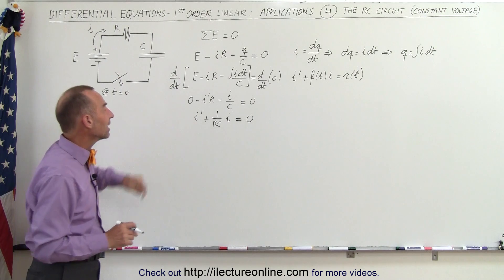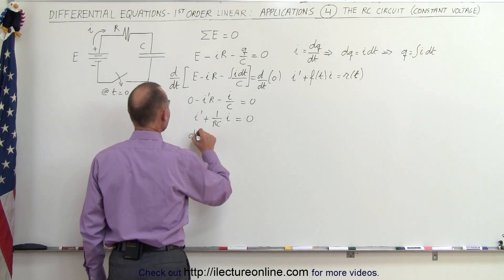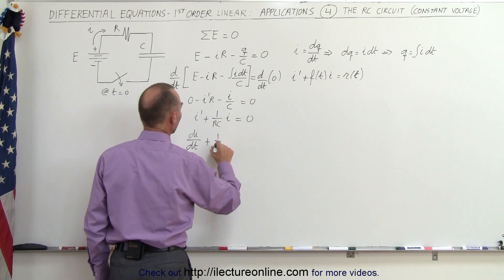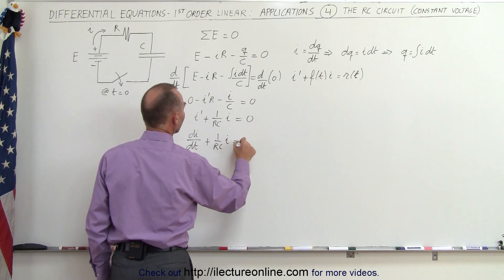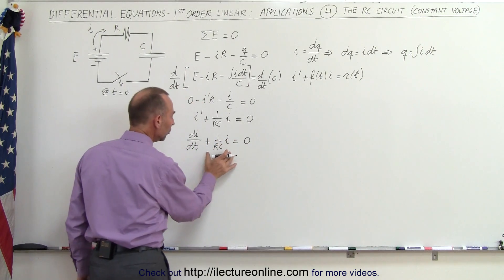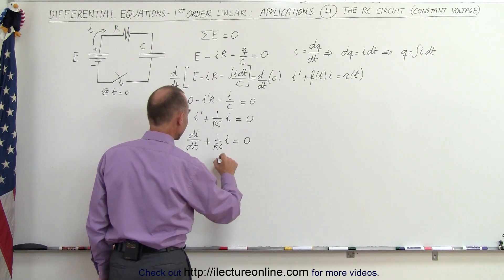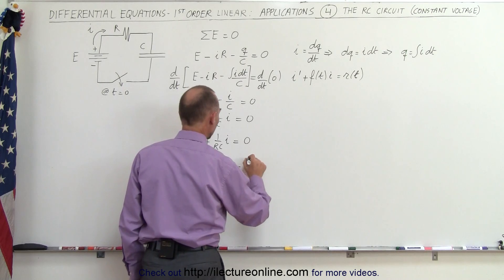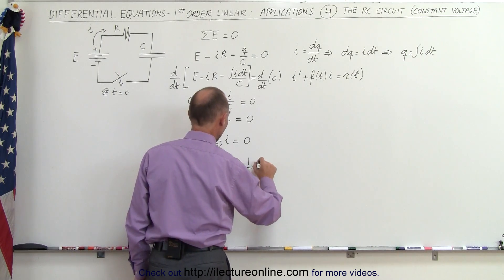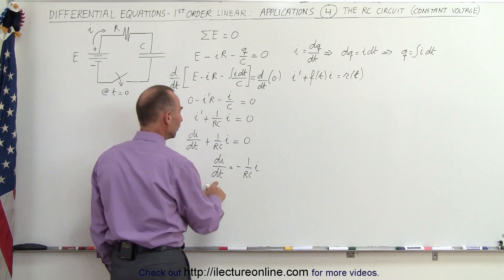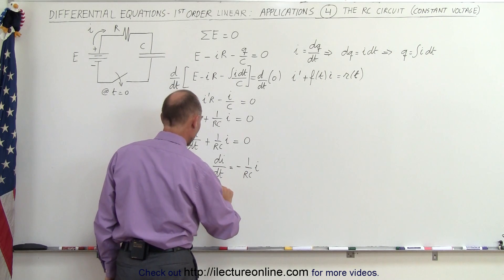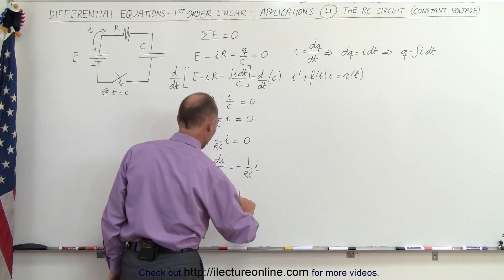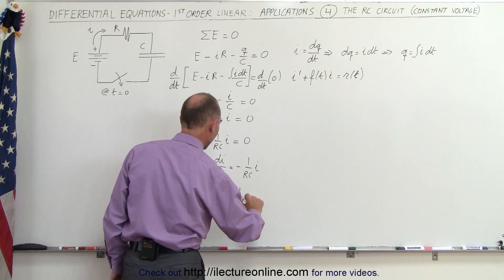Let's rewrite this as: D/DT of I plus 1 over RC times I equals zero. Moving the 1/RC term to the other side, we get DI/DT equals minus 1 over RC times I. Then separating variables, we have DI over I equals minus 1 over RC times DT.